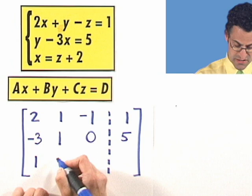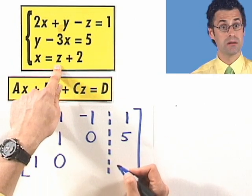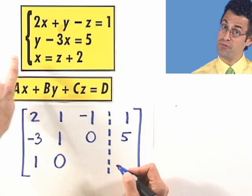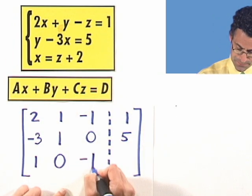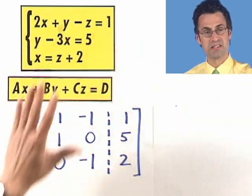The y coefficient doesn't exist. That means it's a 0, invisible 0. And the z coefficient, you might say 1, but you've got to bring it over first. It becomes a negative 1. And then that 2 remains here. That's the augmented version of this system.